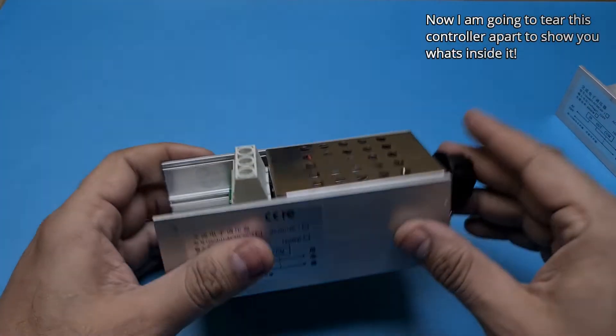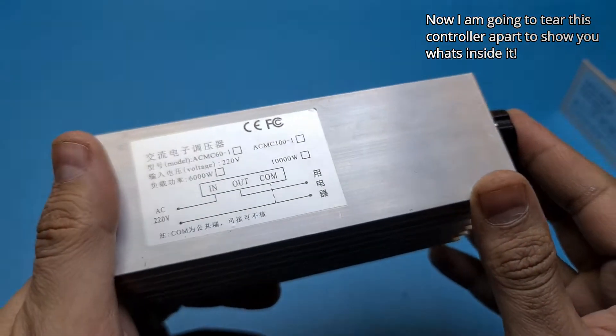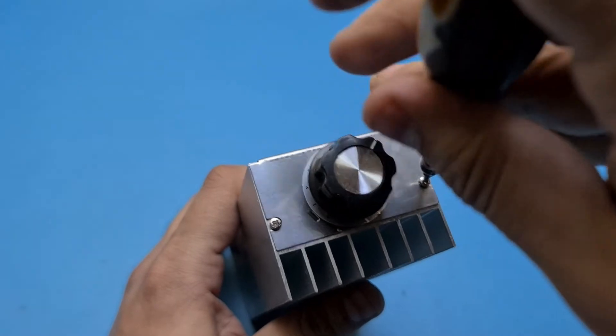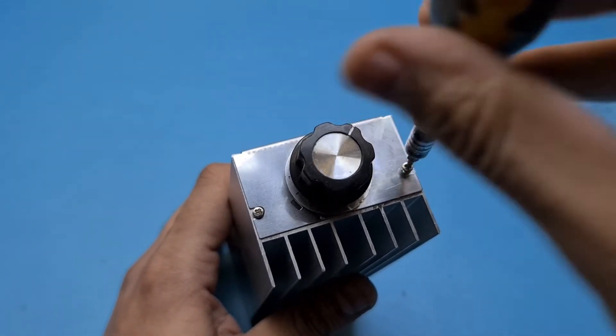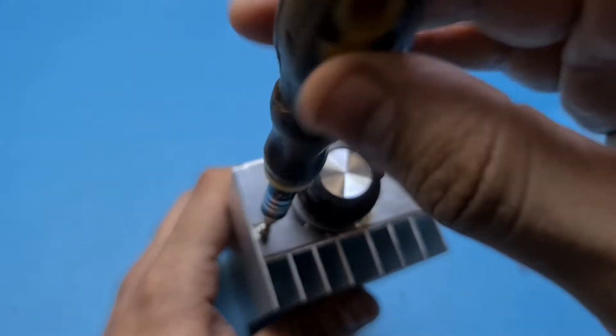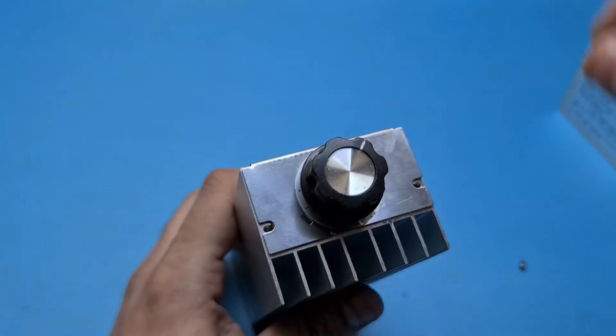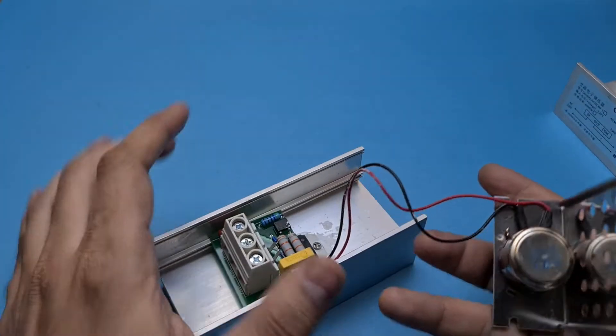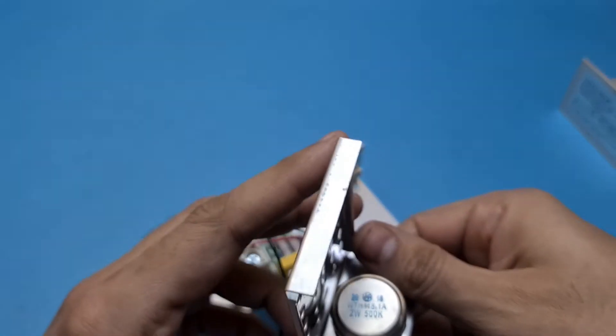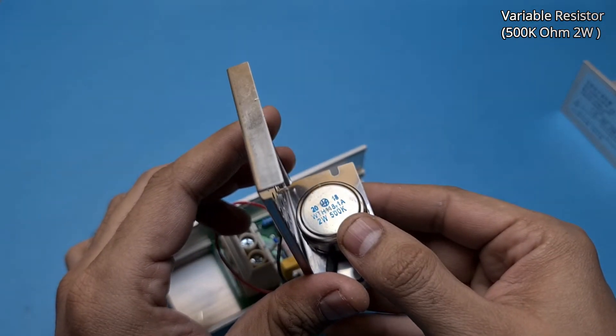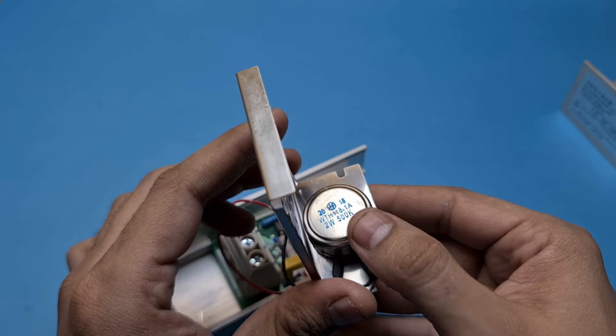Finally, it is now time to see what's inside this controller. I will now tear it open and show you the internal components. Let me open it here. The body is made of aluminum and only two screws are holding it together, so hopefully it should be easier to open it. The upper portion is slidable and very easy to remove. There is a 500k, 2 watt variable resistance side which is there to adjust the voltage.